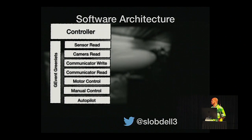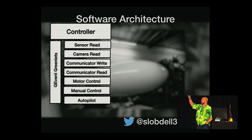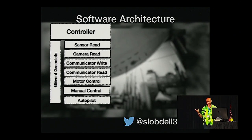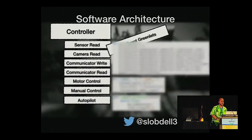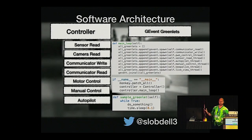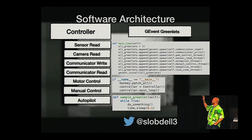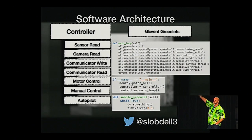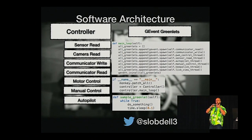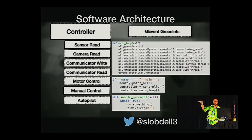Here's the overall software architecture. We have a controller responsible for managing all different asynchronous tasks. I use gevent — emulated multi-threading using greenlets. You spawn multiple greenlets; as soon as you create those they're kicked off asynchronously. Once you get to the join-all, that's going to block until each of those greenlets finishes its task. In this case, each greenlet was an infinite loop.